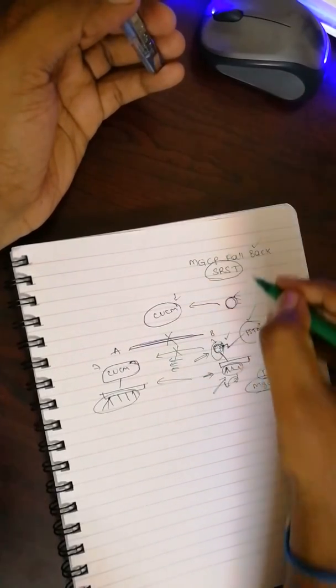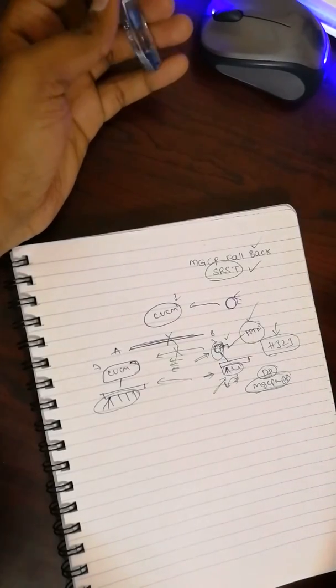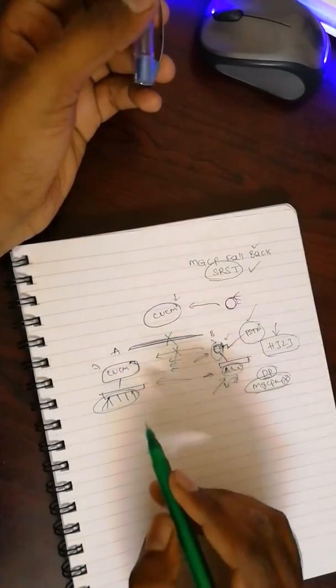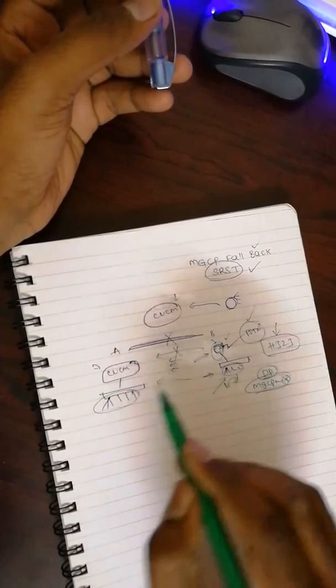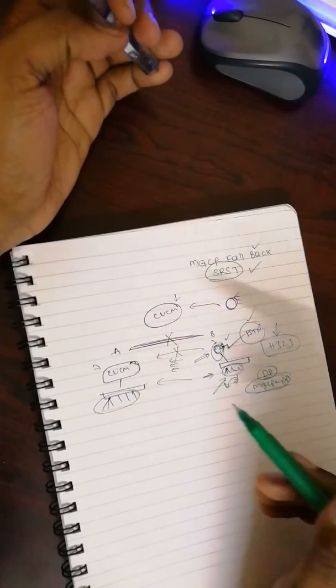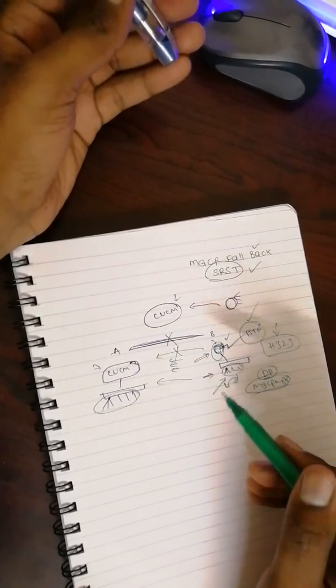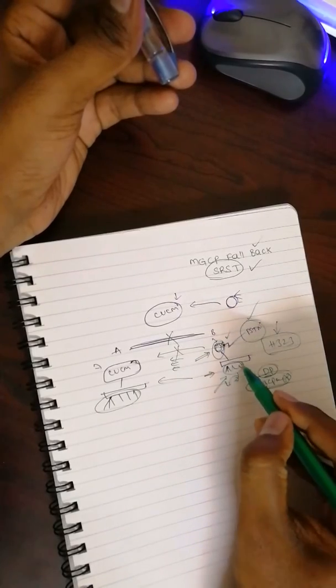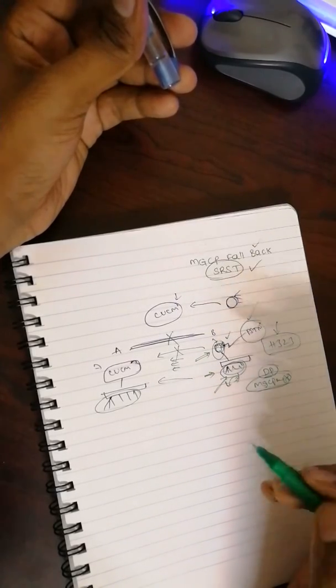In that particular case, we can use SRST, Survival Remote Site Telephony. Using this feature, in the CUCM and in the CME router, we will configure the SRST functionality.